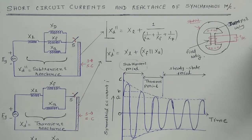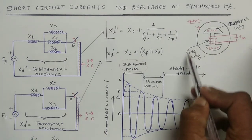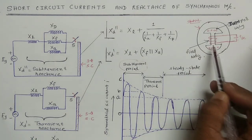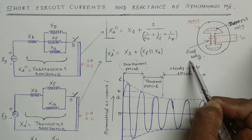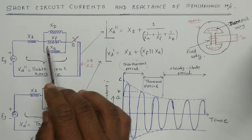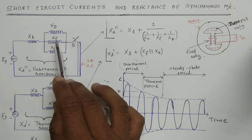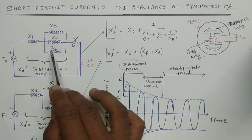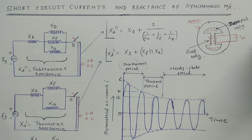For DC excitation, field winding is used and the reactance of field winding is field winding reactance XF, and XA is armature winding reactance.